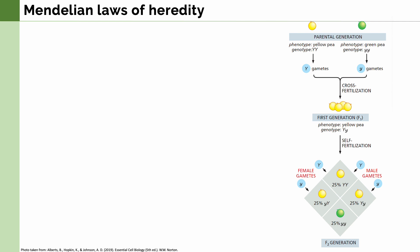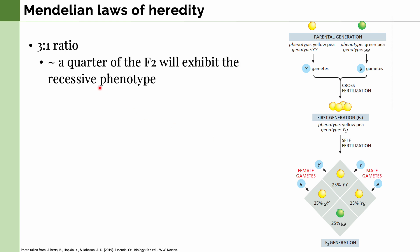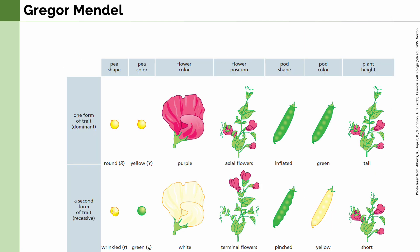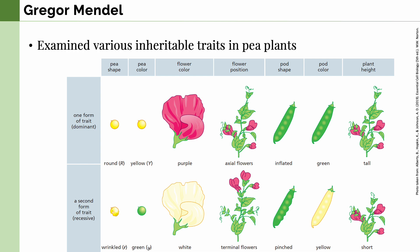In these experiments, Mendel discovered a 3:1 ratio — three quarters of the F2 generation exhibited the dominant phenotype, and only one quarter exhibited the recessive phenotype. This was true for all trait comparisons. He examined various inheritable traits in pea plants, including pea color, pea shape, flower color, flower position, pod shape, pod color, and plant height. For each trait, he always found one dominant form and one recessive form.